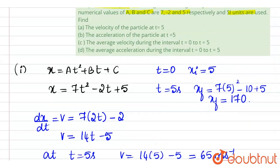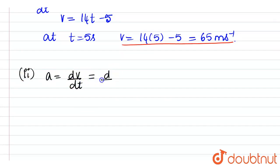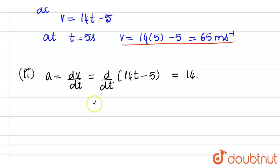In the second part of the question, they ask us to find out the acceleration at t equals 5 seconds. If we differentiate v with respect to time, it is the differentiation of 14t minus 2, which is going to be simply 14. Therefore, acceleration will be 14 meters per second squared. That is, the motion is constantly accelerated.